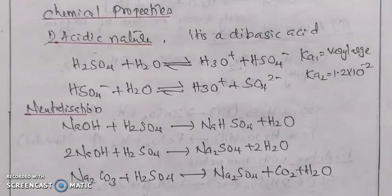Next, neutralization reaction — discussing acid and base reactions producing salt and water. Sodium hydroxide reacts with sulfuric acid to give sodium bisulfate and water. Two molecules of sodium hydroxide react with sulfuric acid to give sodium sulfate and water. Also, sodium carbonate reacts with H2SO4 to give sodium sulfate, carbon dioxide, and water.